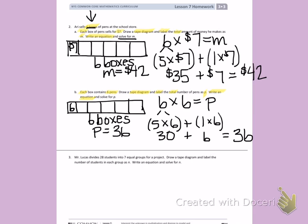Number 3. Mr. Lucas divides 28 students into 7 equal groups for a project. Draw a tape diagram and label the number of students in each group as N. Write an equation and solve for N. So I know Mr. Lucas divides 28 students into 7 equal groups. I'm not only hearing the numbers I need, but those words are telling me exactly what those numbers mean. Draw a tape diagram and label the number of students in each group as N, then I have to write an equation and solve for N.